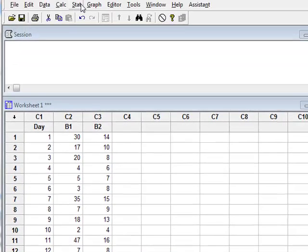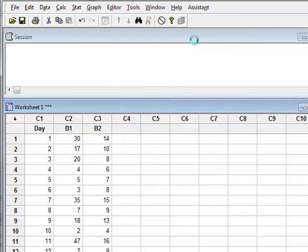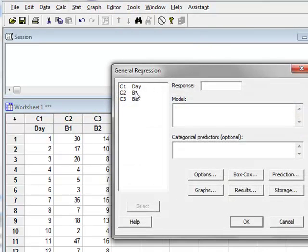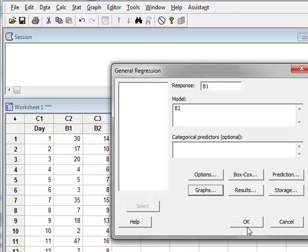We start by looking at a simple regression model. We will use general regression and make B1 behavior the response predicted by behavior B2. Under graphs we will ask to display standardized residuals plotted against the fit values. We click OK and then run the analysis.